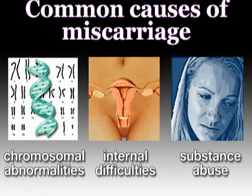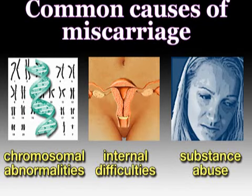Miscarriages are devastating, but they usually occur when there is something very wrong with the baby or the pregnancy. There are three common causes of a miscarriage, which can be subdivided into chromosomal abnormalities, internal difficulties, and substance abuse.